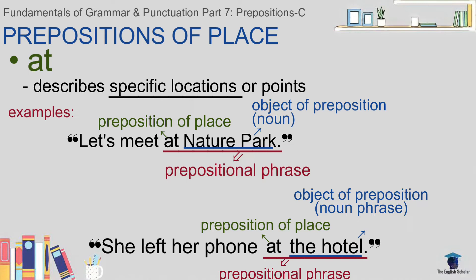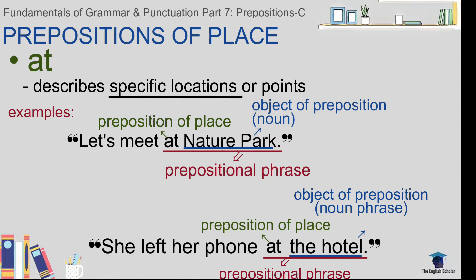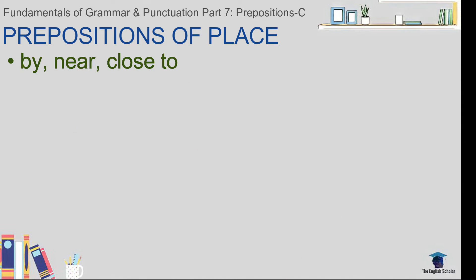Next example: 'She left her phone at the hotel.' You might wonder why we use 'at' when 'hotel' is a general word. That is correct — there are many hotels in the world. But notice the definite article 'the.' The definite article 'the' is used to indicate that the noun it modifies is known to the listener. So in this sentence, we can assume that the hotel name is known to the person being spoken to or whoever is listening.